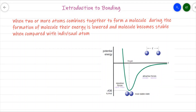Namaste. In this video we will get acquainted with the term known as bonding. Whenever two or more atoms combine with each other to form a molecule, we observe that the potential energy of the system or the molecule is less compared to individual atoms. As the potential energy of the system is less compared to individual atoms, we see that the molecule is stable.